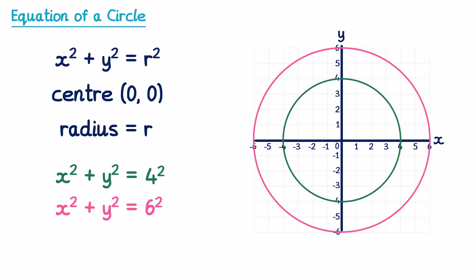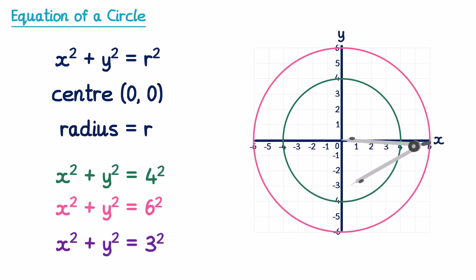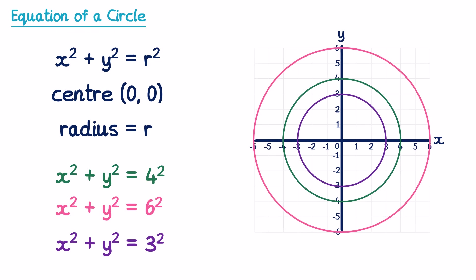Sometimes an exam question will give you an equation and ask you to draw out the graph. For example, x² + y² = 9, which we can write as x² + y² = 3². So we need to draw a circle with a radius of 3 and centre at the origin. To do this you need a pair of compasses. Place the sharp end right on the origin at (0, 0), open the other end to a radius of 3, then do one full turn — you will have drawn a circle with radius 3 and centre at the origin, like this.